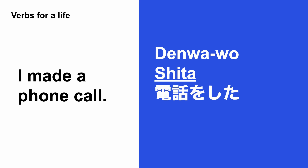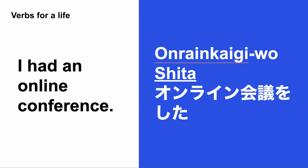Next is 電話をする — to make a phone call. I made a phone call: 電話をした. 電話 means phone call. The past tense is したする, so 電話をした (casual) or 電話をしました (polite).